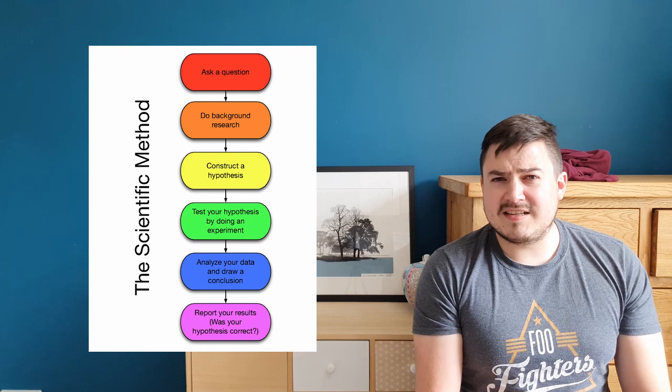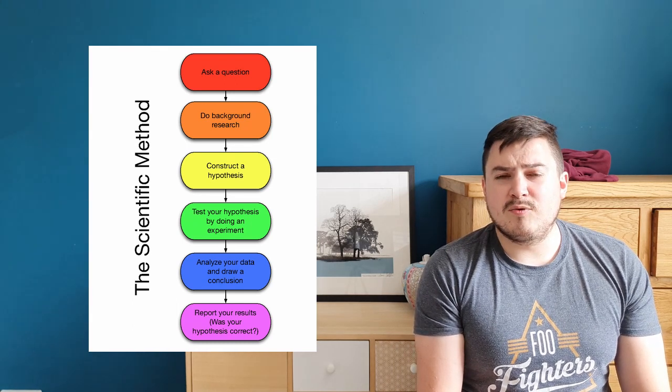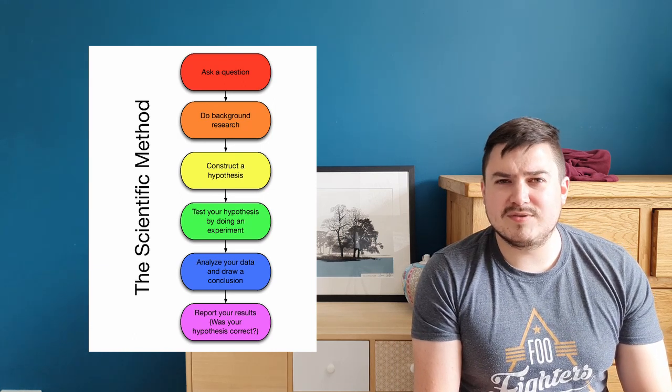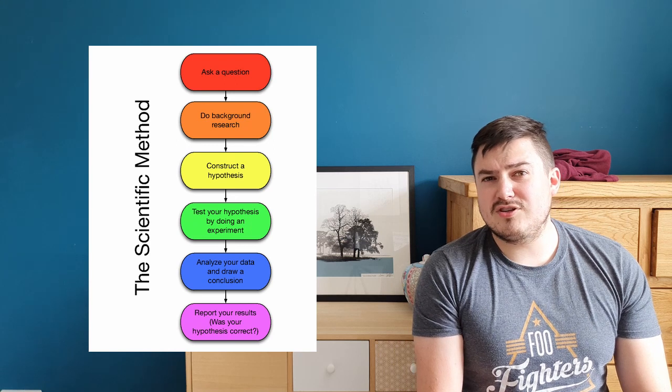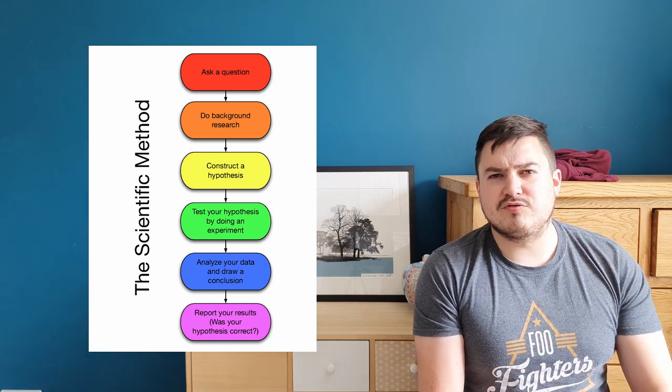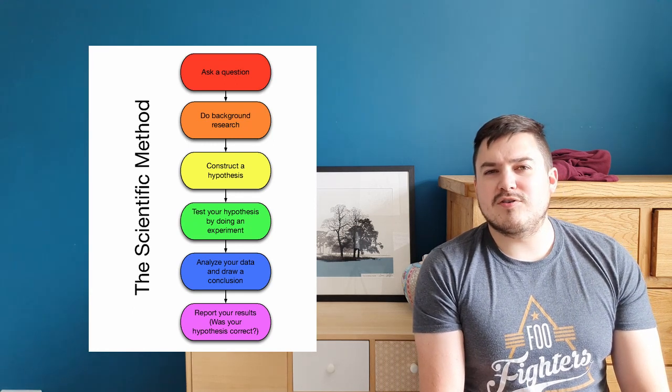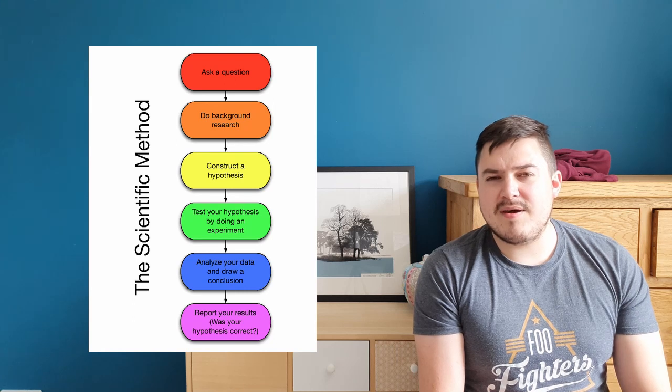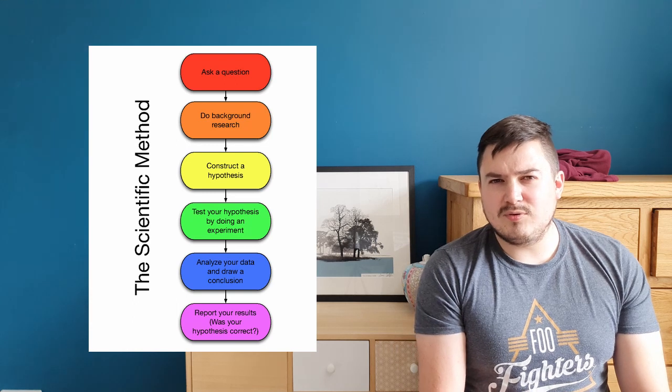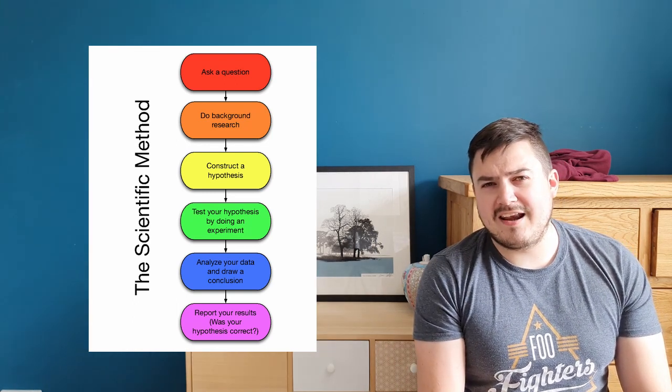Once you've written a method, the next step is to design a results table to put your results into. Once you have a results table, you then write a risk assessment to make sure that your experiment is not too dangerous, and if it was dangerous in any way, you do everything you could to reduce those risks and make it so you are more able to do the experiments safely. Once you have a results table and the risks are all planned out and you have a method, you'd collect your results into that results table. Once they're in the results table, you would then draw a graph to represent those results so you can analyze the data.